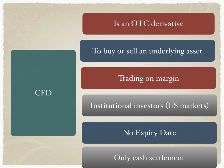So these are the six attributes of a contract for difference. First, it is an OTC derivative — a bilateral contract between the hedge fund and the CFD provider to buy or sell an underlying asset. Second, the hedge fund can initiate a long or short position. Third, it involves trading on margin with extensive leverage. Fourth, institutional investors are the largest participants. Fifth, there is no expiry or maturity date. Sixth, there is only cash settlement — no physical settlement.